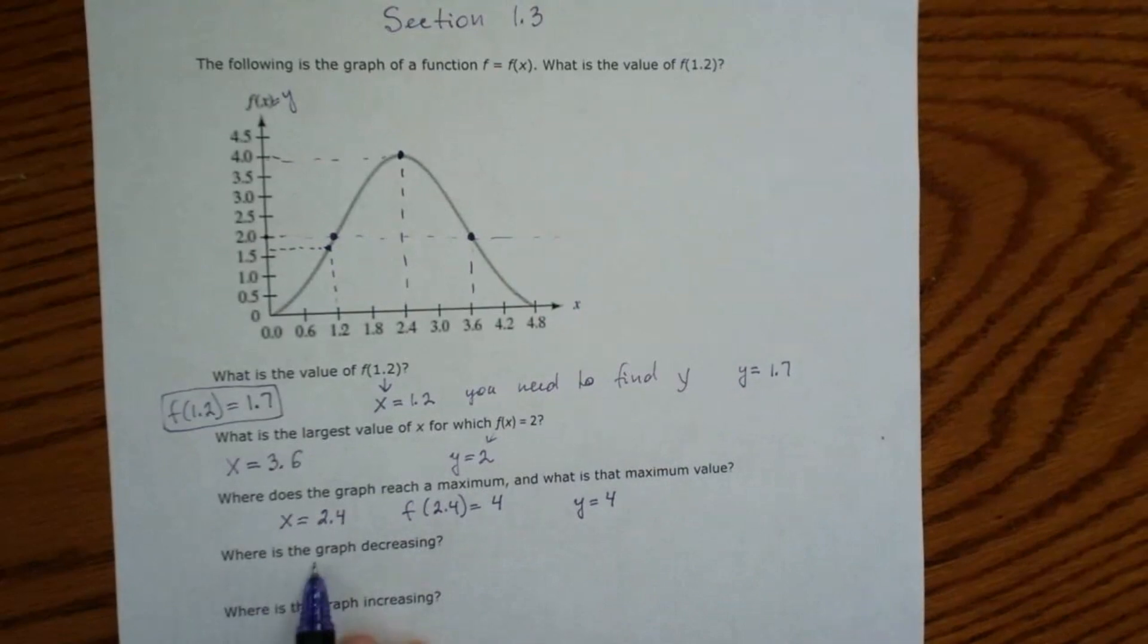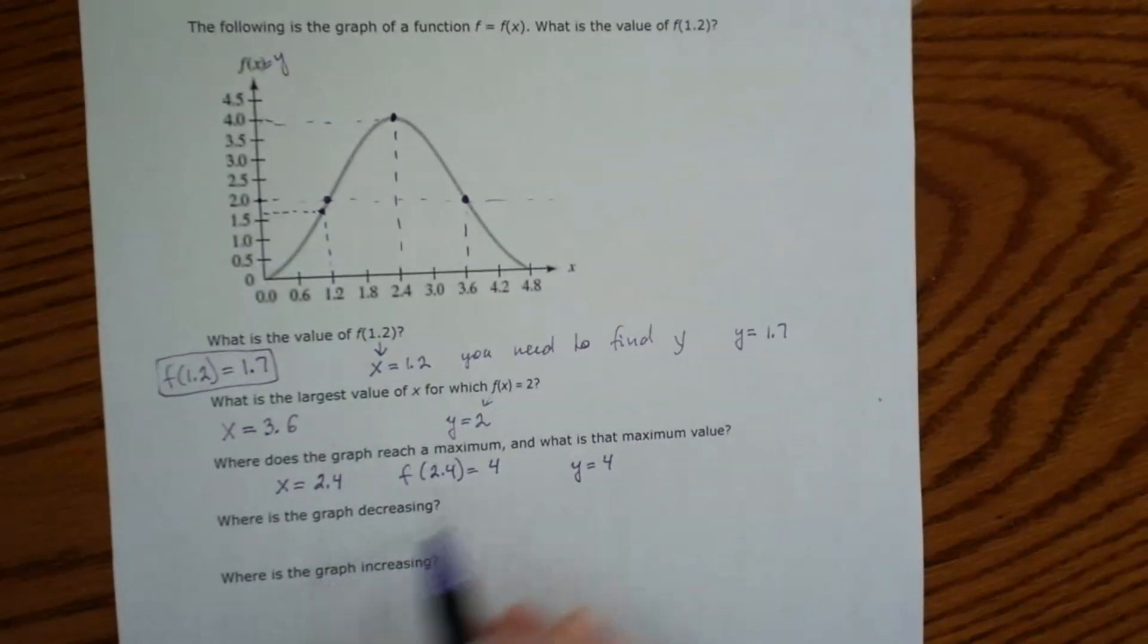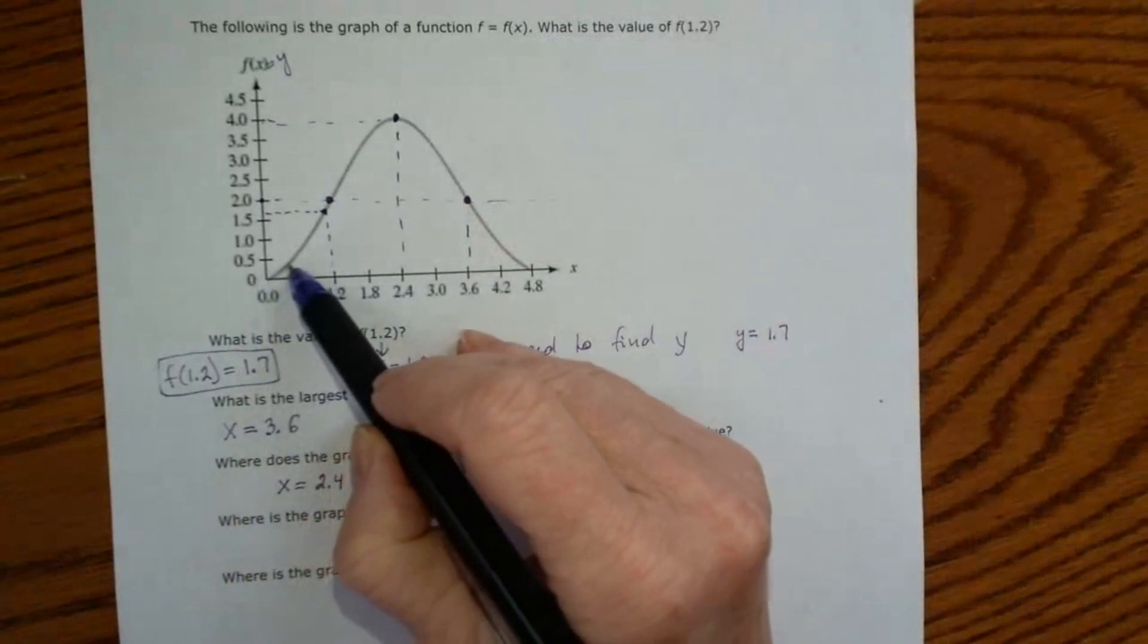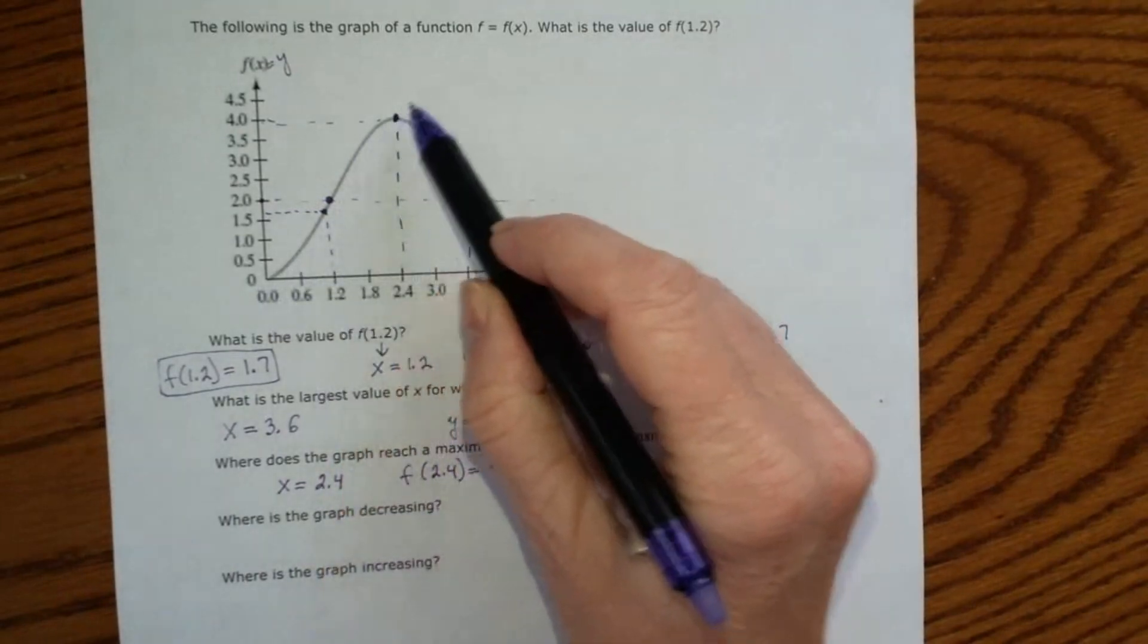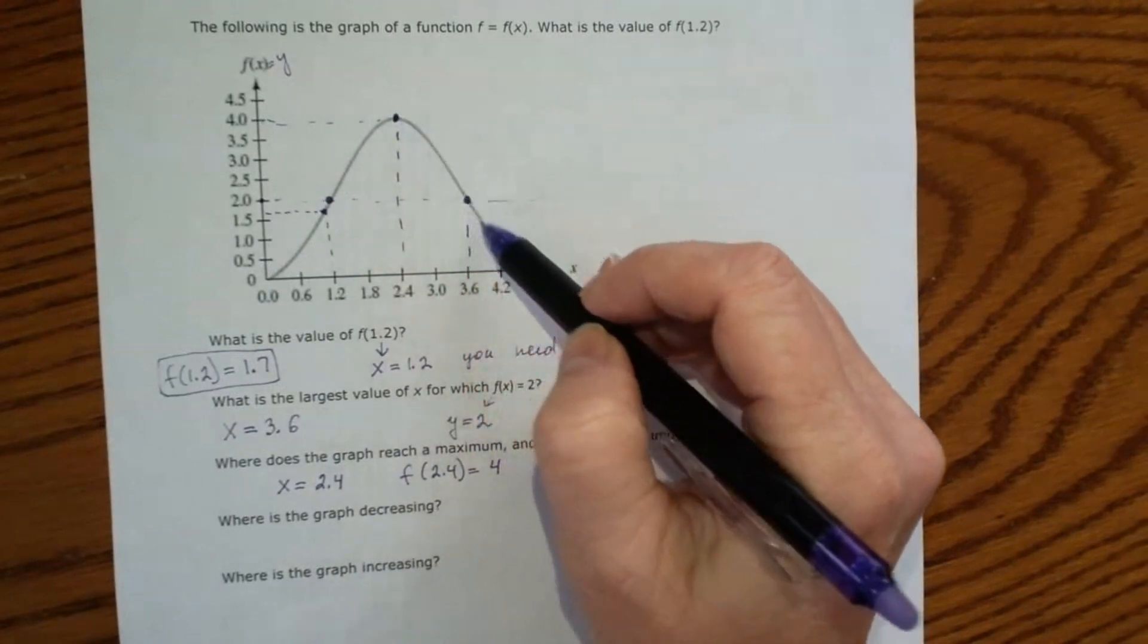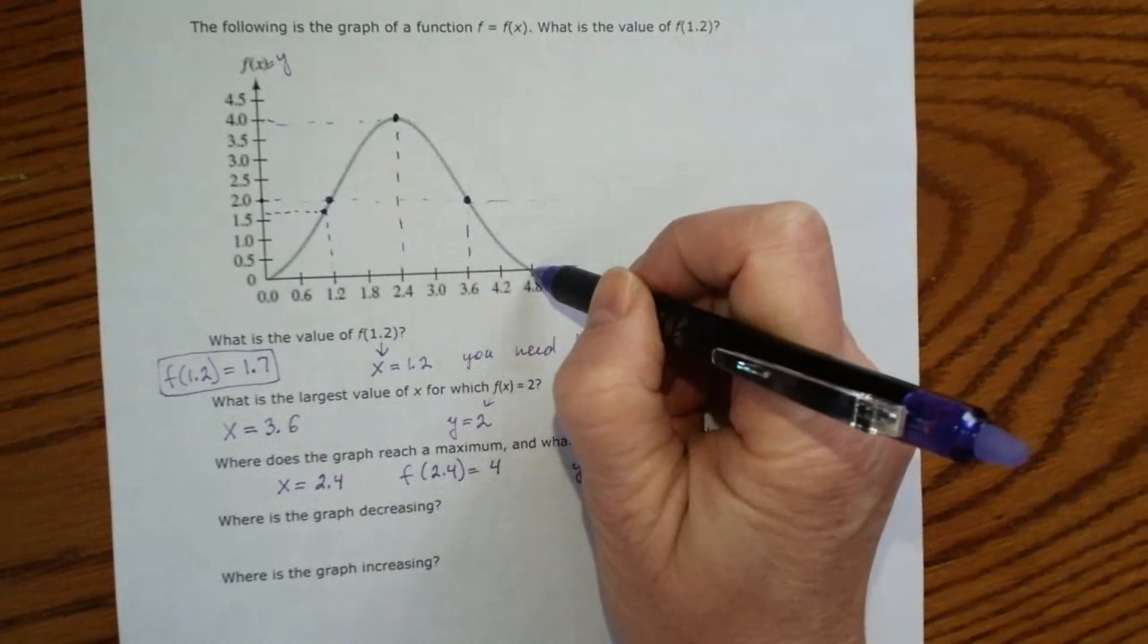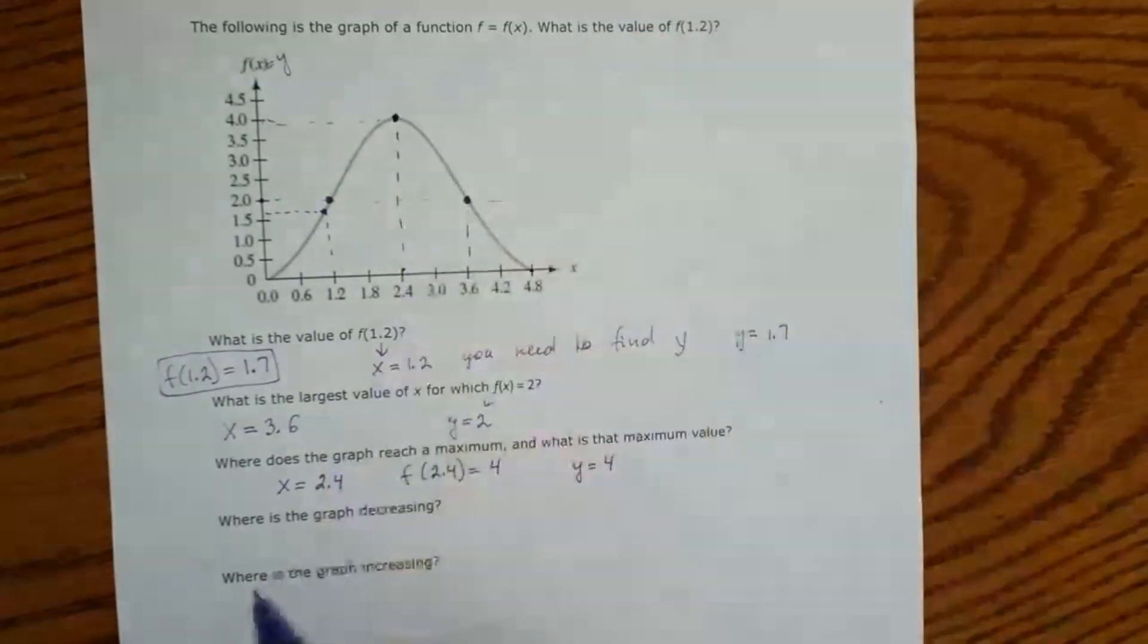Where is the graph decreasing? Decreasing means the graph is falling down. So you look at the graph from left to right. In the beginning, the graph is going up, so this interval is increasing. And after this point, after reaching the maximum point, the graph started falling down. So from this point to this point, the graph is decreasing.